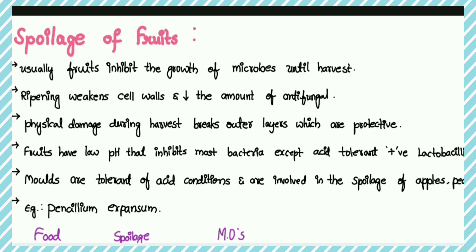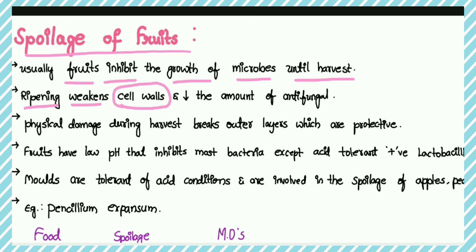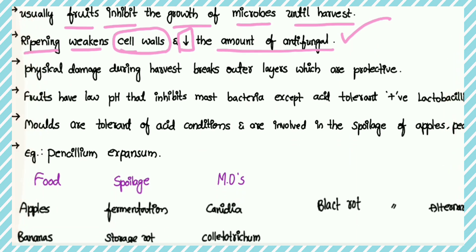In this video we are going to discuss about spoilage of fruits. Usually fruits inhibit the growth of microbes until harvest — that means they prevent the growth of microorganisms until harvest. Ripening of fruits weakens the cell walls and decreases the amount of antifungal compounds. Physical damage from outside during harvest breaks the outer protective layers of fruits.